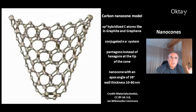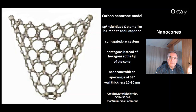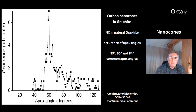This is a model of the carbon nanocone. These are sp2 hybridized carbon atoms, like in graphite and graphene. This is a conjugated pi-electron system. At the tip you have pentagons instead of hexagons, because with hexagons it would not work. The nanocone has an apex angle of 39 degrees and a wall thickness of 10 to 80 nanometers.